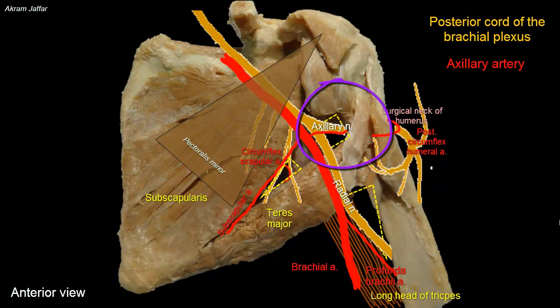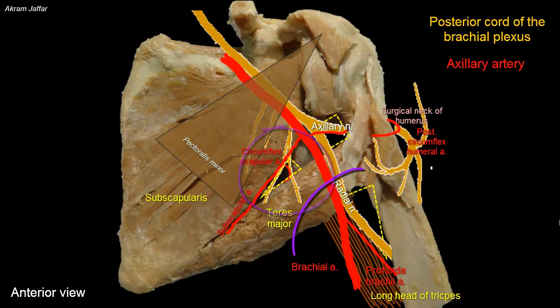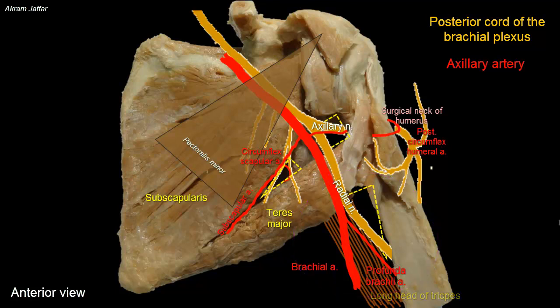To summarize: the quadrangular space transmits the axillary nerve and the posterior circumflex humeral vessels. The triangular space medial to the quadrangular space transmits the circumflex scapular artery. The inferior triangular space, below teres major, transmits the radial nerve and the profunda brachii vessels.